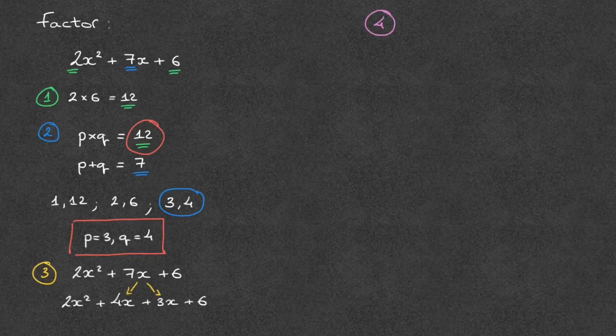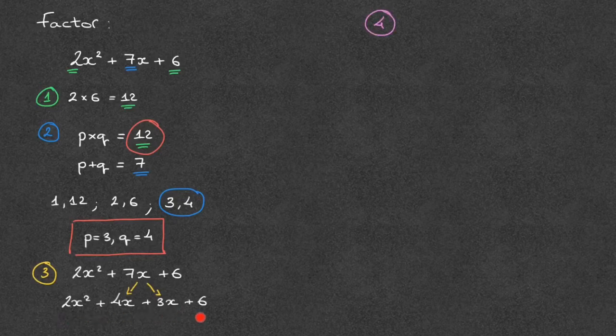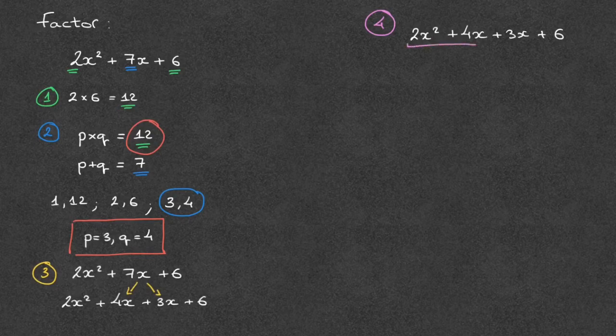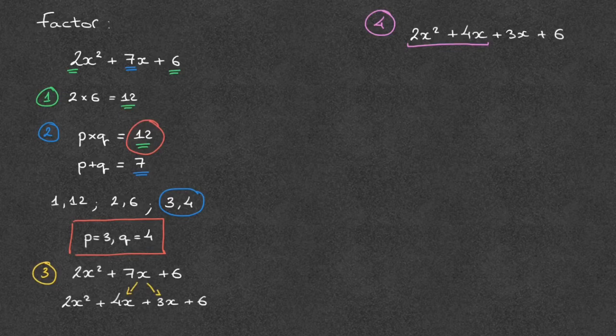So I'll quickly copy this last result we had here. That was 2x squared plus 4x plus 3x plus 6. To factor this, we start by focusing on these first two terms. So that's 2x squared plus 4x. And we fully factor those two terms.